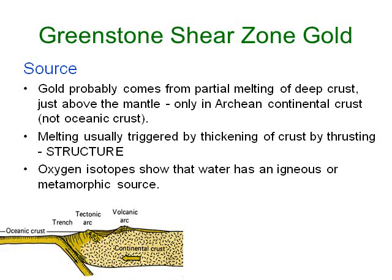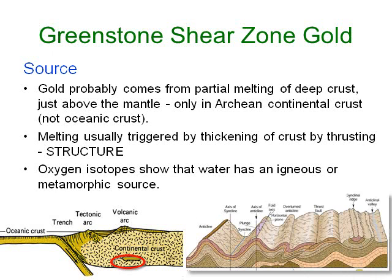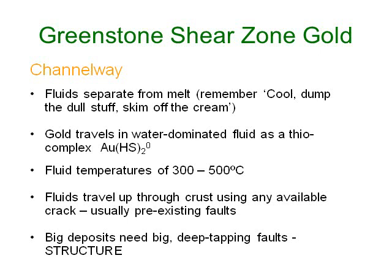The source for the gold itself appears to be a gold-enriched layer in the deepest portion of the crust, about 20 to 30 kilometers below surface. This gold-rich source area seems to have been particularly well developed in the Archean crust — later-formed crust is less enriched. Partial melting of this crust is usually triggered by folding and thrusting, which thickens the crust and pushes the lower portions deeper into the underlying mantle where they melt. Analysis of oxygen isotopes in the hydrothermal fluids has shown that the water derived from metamorphism and melting of the crust rather than from deeply penetrating groundwater.